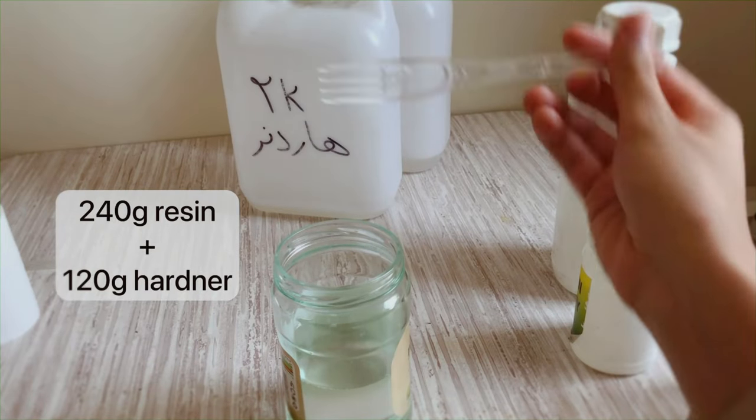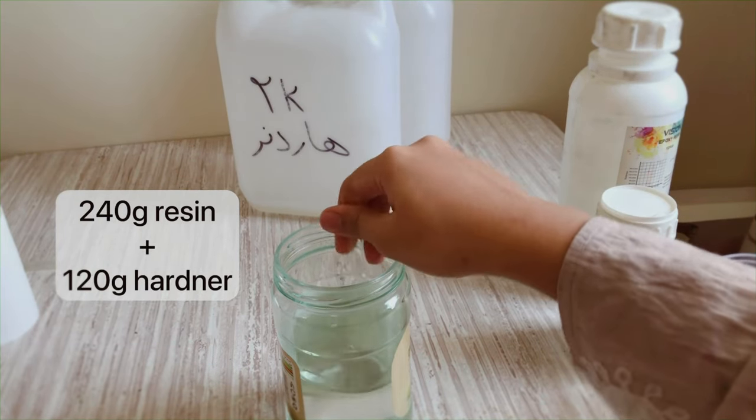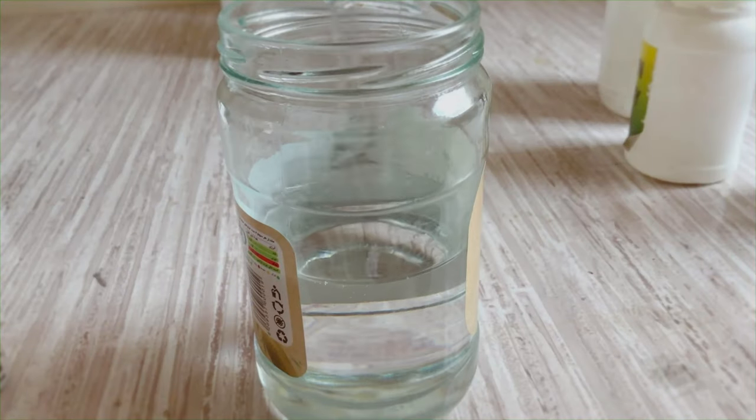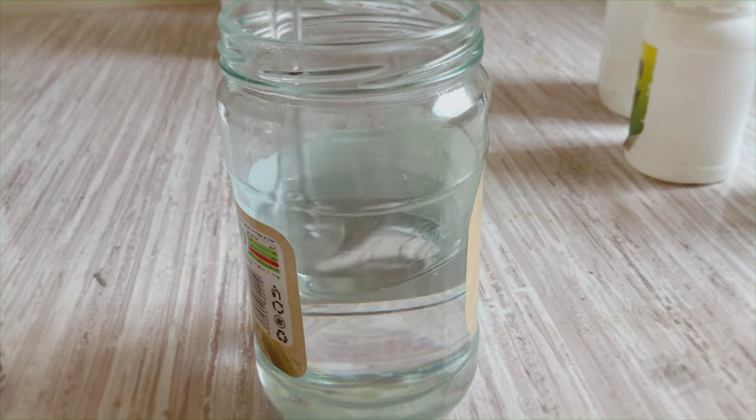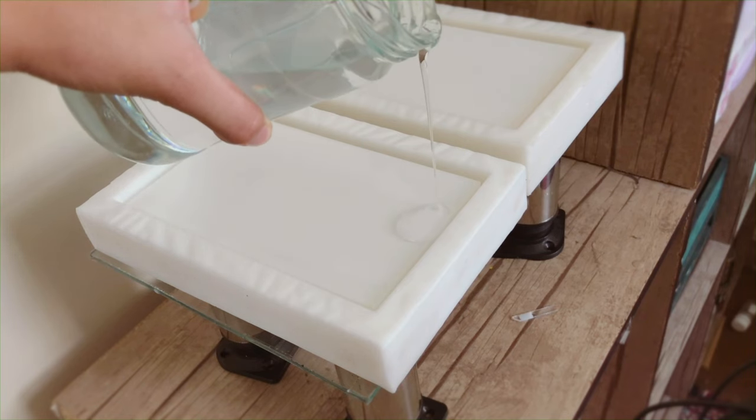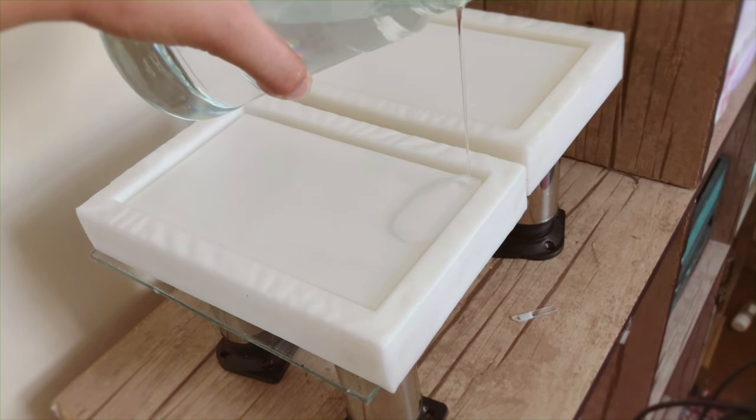240 grams resin mixed with 120 grams hardener, mixing well until they become clear. This much is enough for one clutch. Pour them in the mold slowly to avoid making bubbles.